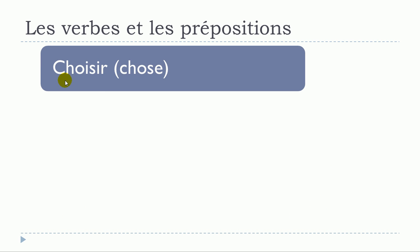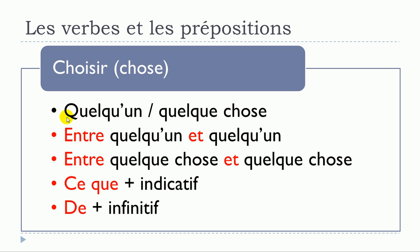Next verb: choisir. First structure: choisir quelqu'un or choisir quelque chose — no preposition. Or choisir entre quelqu'un et quelqu'un, and similarly choisir entre quelque chose et quelque chose. It could also be choisir ce que plus verbe à l'indicatif. And the last one: choisir de plus verbe à l'infinitif.